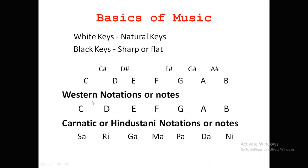These are the western notes: C, D, E, F, G, A, B — seven names in total. The same thing can also be expressed in Carnatic or Hindustani notation: C is Sa, D is Re, E is Ga, F is Ma, G is Pa, A is Dha, and B is Ni — Sa Re Ga Ma Pa Dha Ni. They sound exactly the same, so it's very easy to relate and learn.